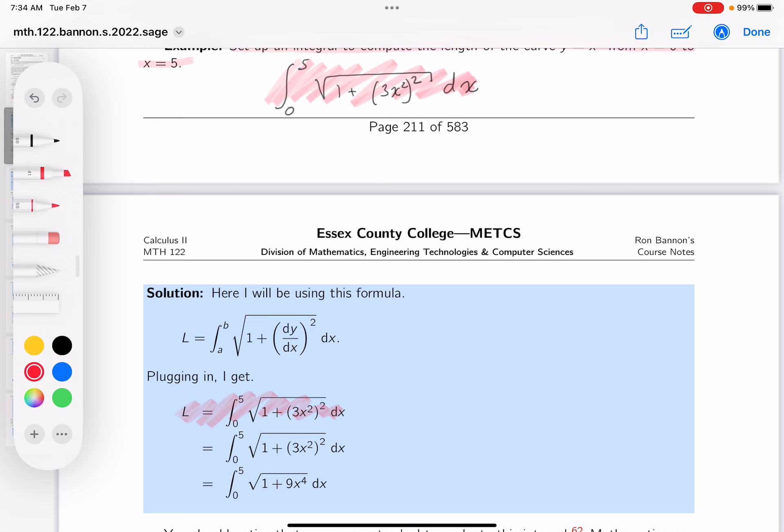And let me just make sure you understand what you're doing here. I did simplify it a little bit. You don't have to. But let's see what I did there. I just squared it and get 9x to the 4th. Not so bad. Okay? Thank you.